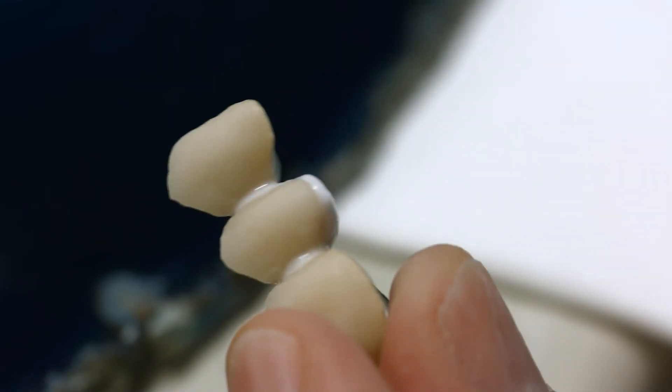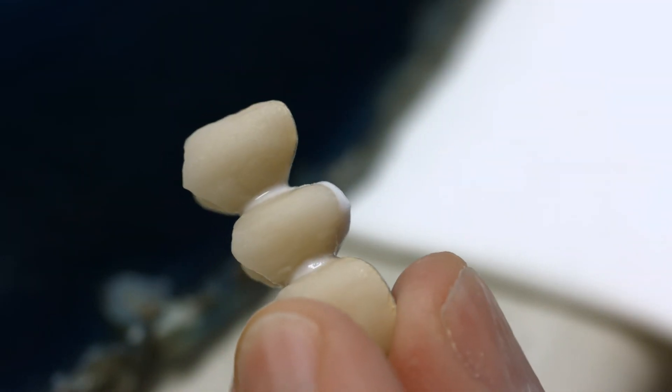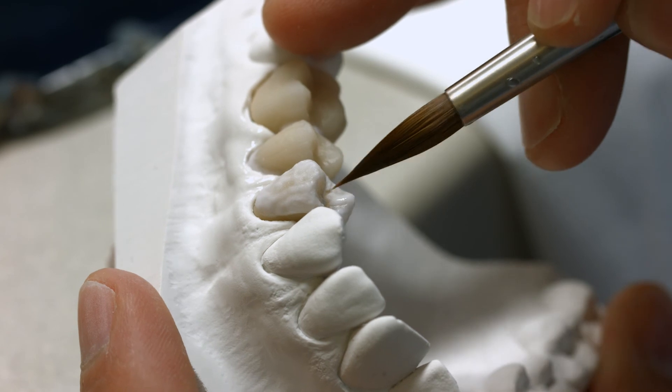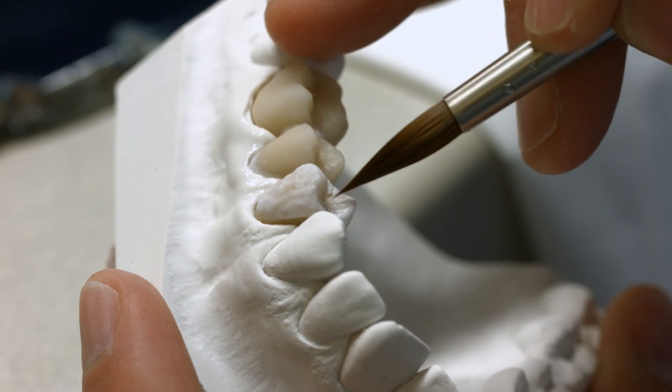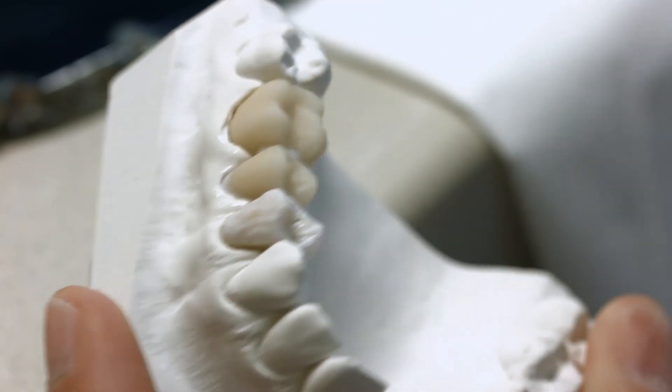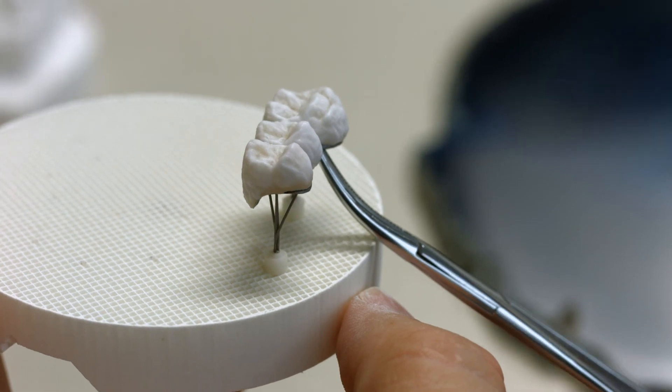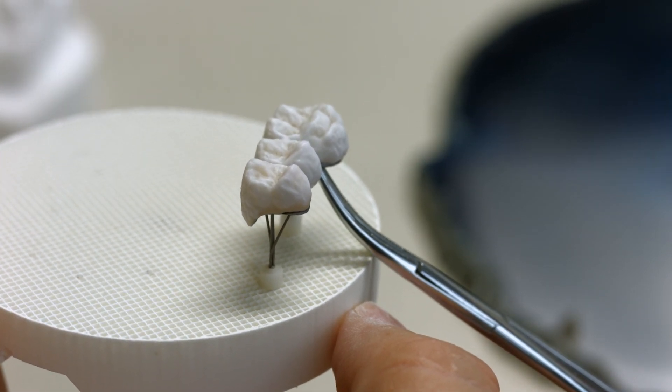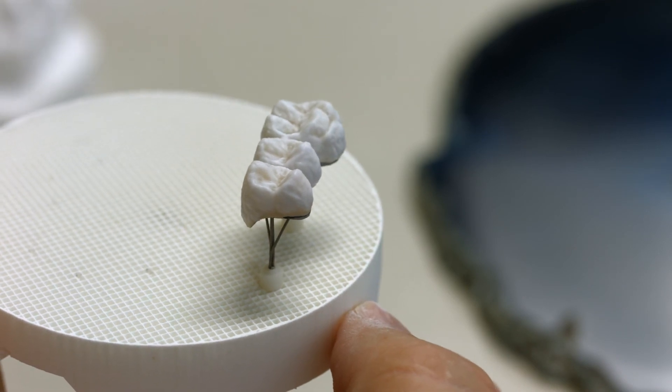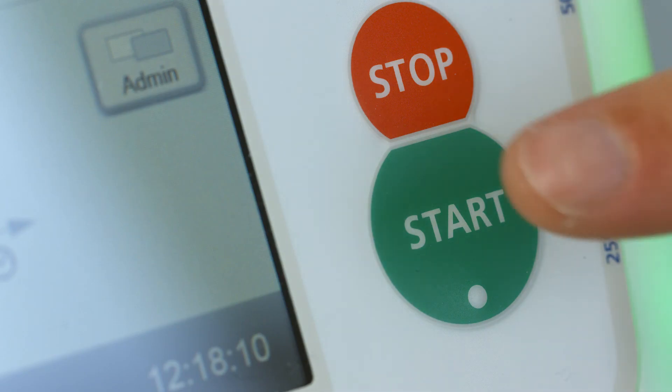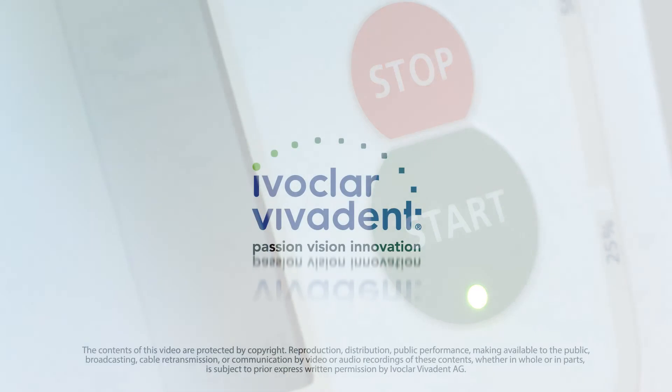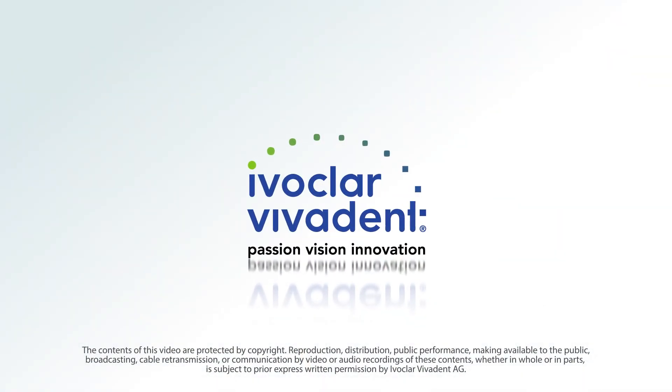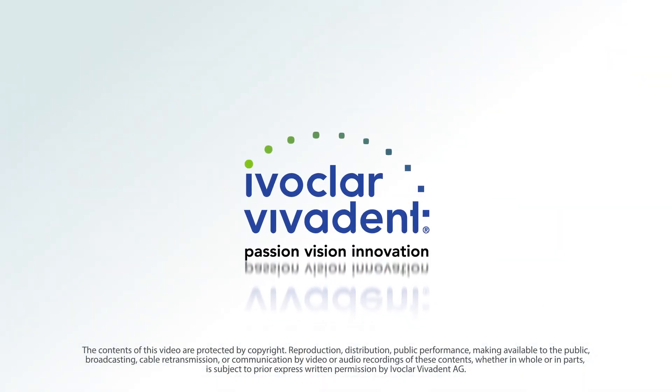Pay special attention to interdental spaces as well as contact points. Before firing, separate the interdental area down to the opaquer. Place the completely layered restoration on the firing tray and ensure adequate support. The restoration is now ready for the second firing of IPS Style Ceram-1.